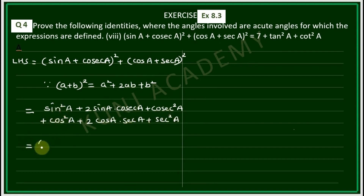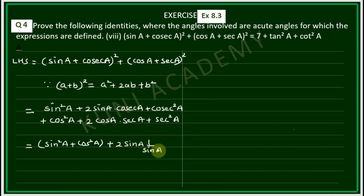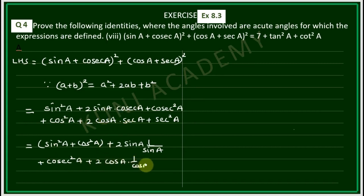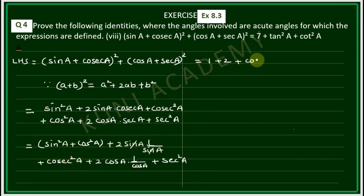Taking sin²A and cos²A together. Now 2sinA·cosecA = 2sinA × (1/sinA), because sinA and cosecA are inverses of each other. Similarly, 2cosA·secA = 2cosA × (1/cosA). The sinA and cosA cancel from numerator and denominator, each product equals 2.